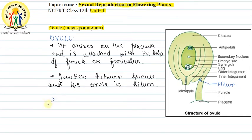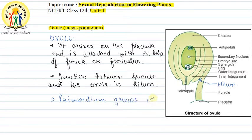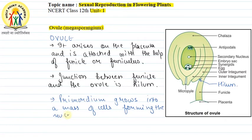The funicle is attached with the help of hilum. Now, how does the formation of the ovule happen? The primordium is a group of cells at the earliest stage of development. The primordium grows into a mass of cells, forming the nucellus — the body of the ovule.